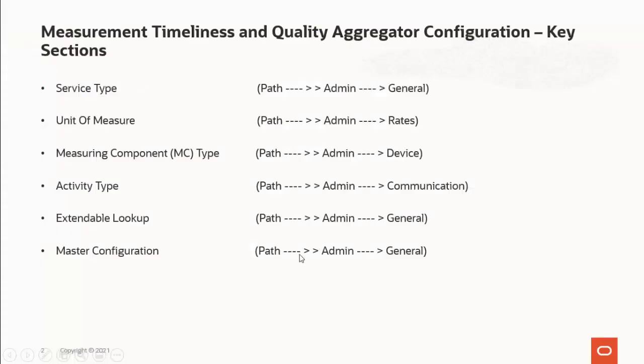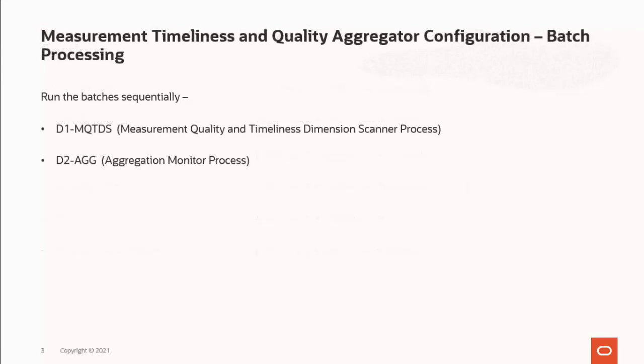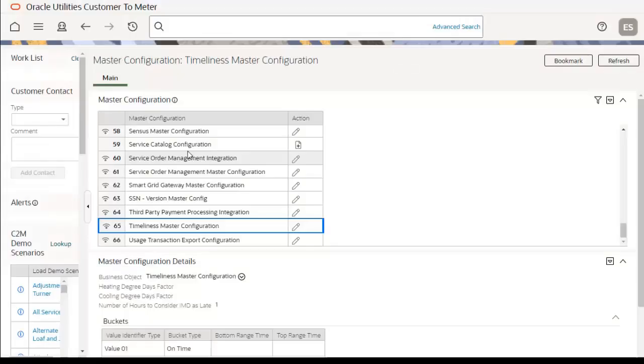Now let's do the demonstration. Before starting, we need to run two batches sequentially. The first batch is D1MQTDS — the Measurement Quality and Timeliness Dimension Scanner batch control. This creates measuring component aggregators for each unique combination of postal code, CT device types, head and systems, usage group, market, service type, geographic code, manufacturer, model, service provider type, etc. It supports multi-threading. The second batch is D2AGG — the Aggregation Monitor batch process, which processes all active master aggregators along with linked sub-aggregators on a scheduled, recurring basis.